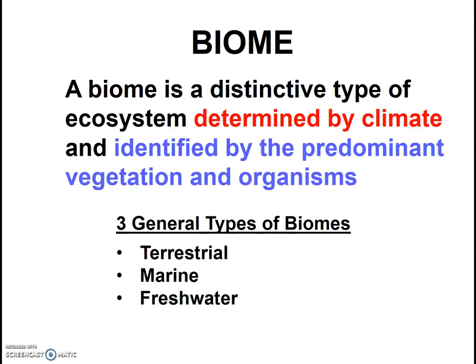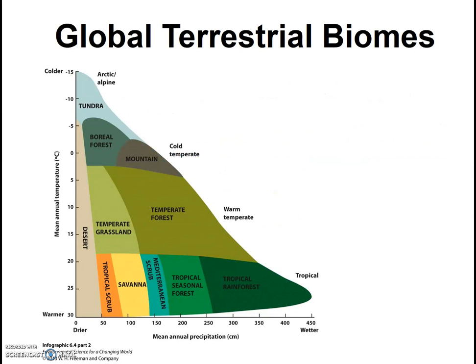Notably, there are three general types of biomes: terrestrial, land-based; marine; and freshwater. Within each of these general types, there are many specific biomes. For example, check out Infographic 8.4, which shows many different terrestrial biomes. It also shows the climatic factors — specifically temperature and precipitation — that produce these distinctive biomes. Take a moment to study that diagram.